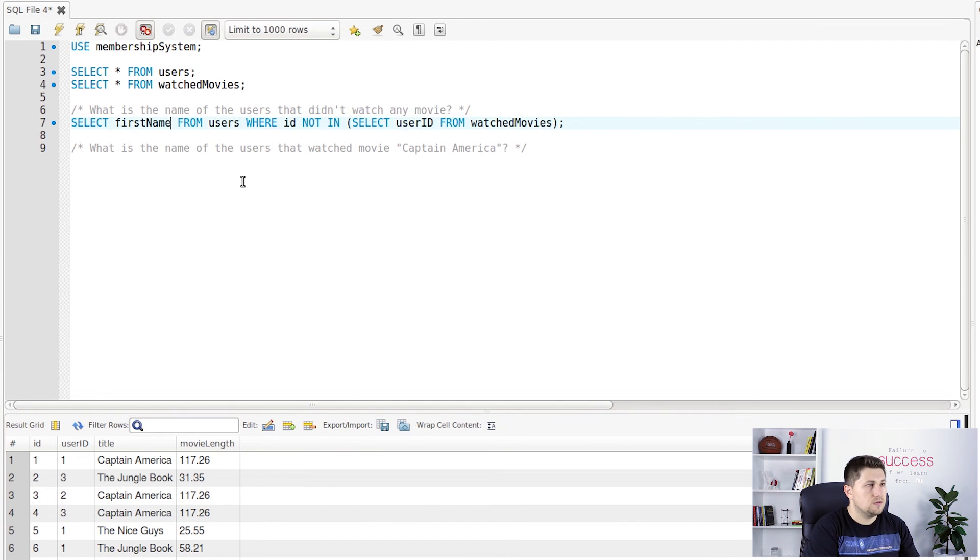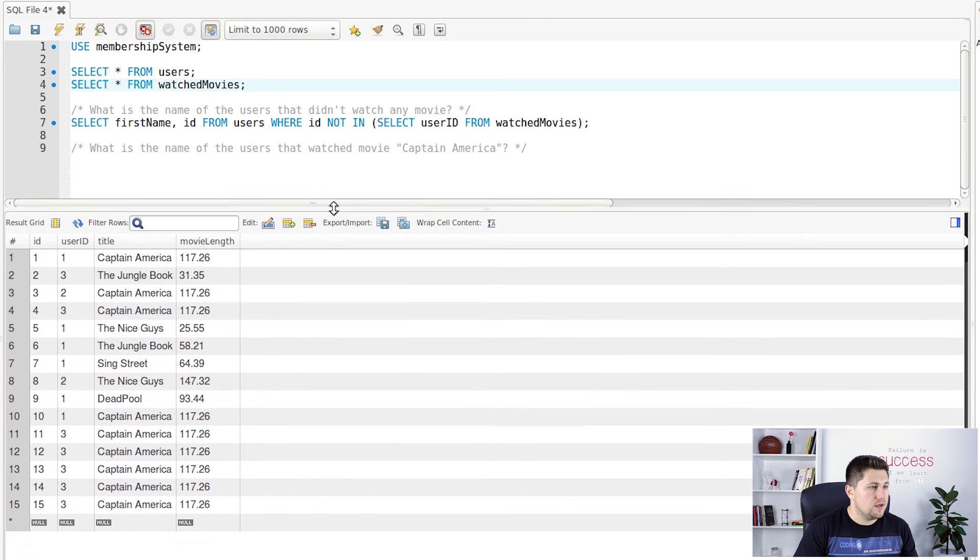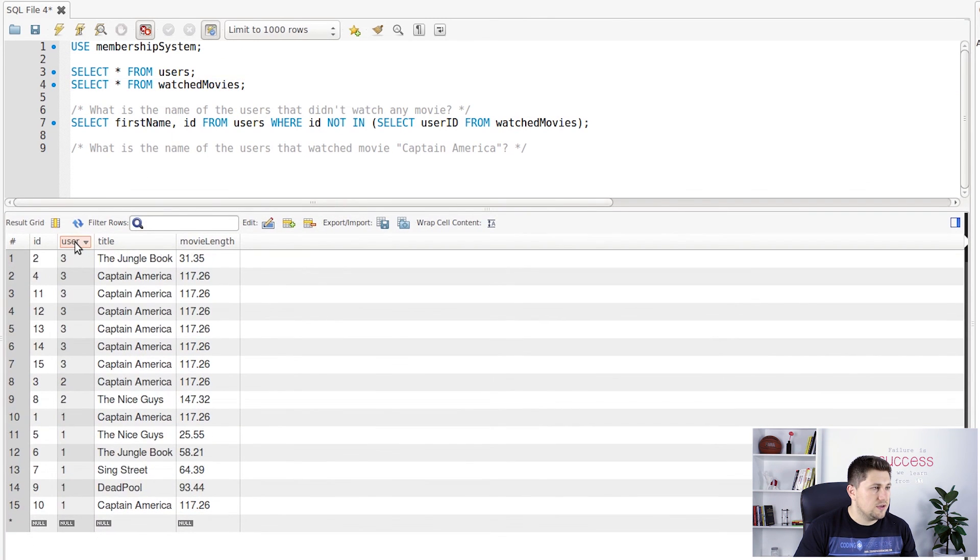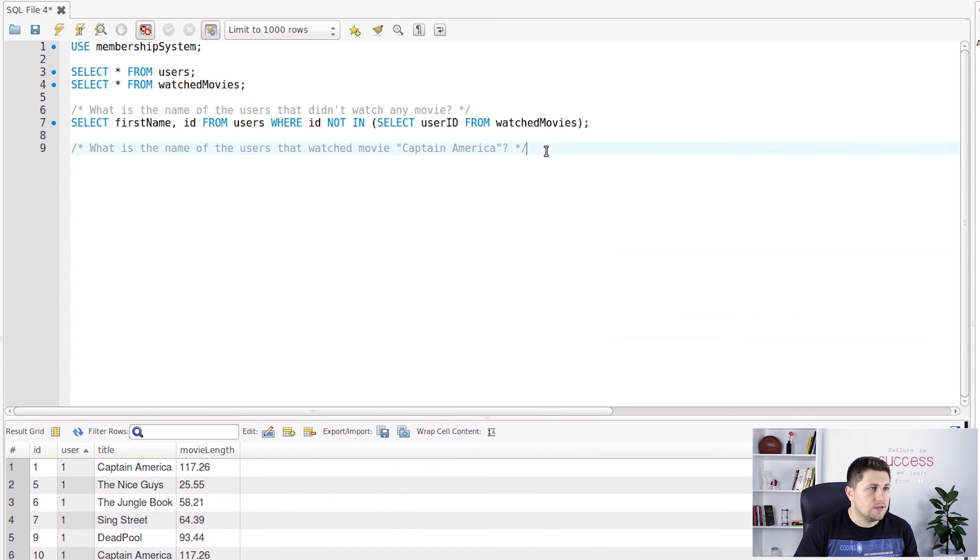Okay, so the users that didn't watch any movie are Richard and user name. And now we will just say like this and we can see that users with ID 4 and 5 didn't watch any movie. So let's check if that is correct. And now if we check this we can see that there isn't any user ID with 4 and 5 that watched one movie, so our SQL query is correct.